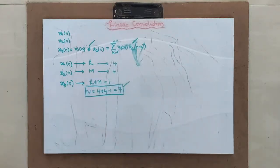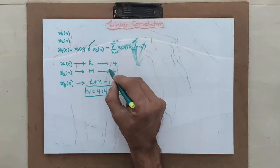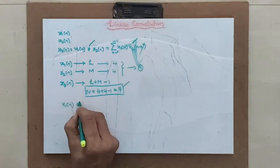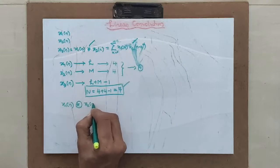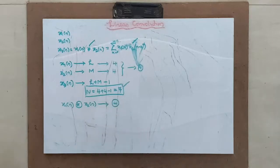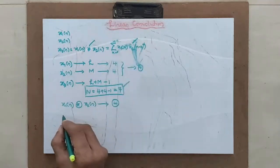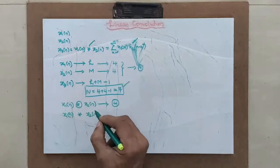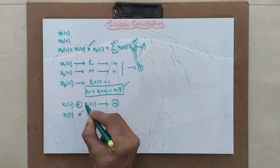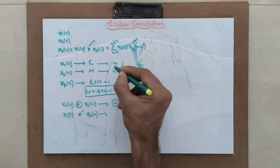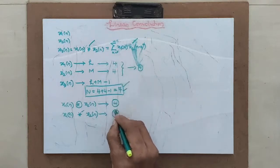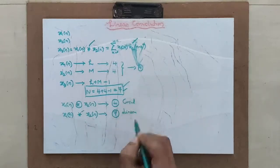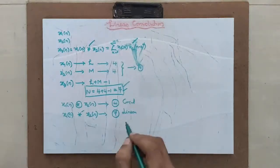In case of linear convolution the output length is 7. If it is circularly convoluted, you know that when circularly convoluting X1 and X2 both of length 4, the output length will be 4 — the maximum length. Whereas X1N linearly convoluted with X2N gives output of length 4 plus 4 minus 1, which is 7. That is the difference between circular and linear convolution, which is a very important point to understand.